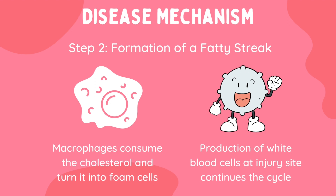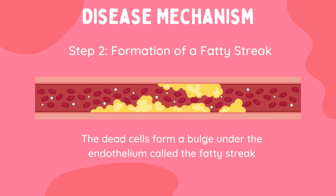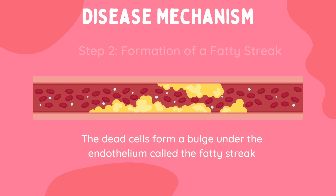The macrophages will consume the cholesterol and become foam cells, which get their name from their foamy appearance. After the consumption of cholesterol, the foam cells will die and more white blood cells are sent to the area as a response. This cycle continues and the endothelium is damaged even more. The dead cells will form a bulge under the endothelium, referred to as the fatty streak.